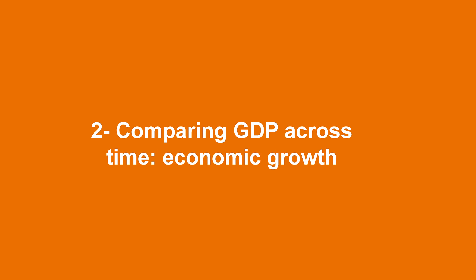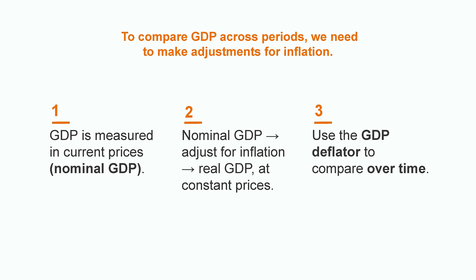Now that we know what GDP is, let's compare GDP across time. To understand if the economy is indeed growing — that is to say that more goods and services are produced — we need to be able to compare GDP across time. GDP is collected at current or nominal prices. Prices this year are different from prices last year. Think about your grocery shopping. So, to compare GDP across periods, we need to make adjustments for inflation to arrive at the real GDP. A statistical tool called the GDP deflator is used to adjust GDP from nominal to constant prices.